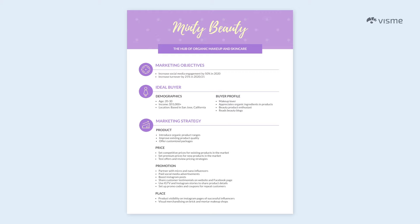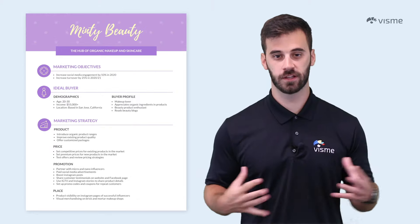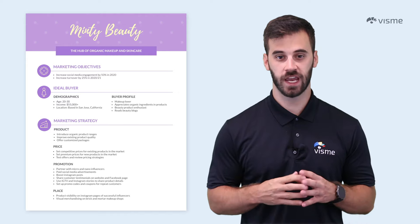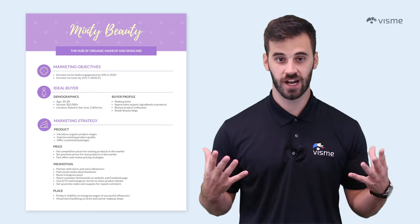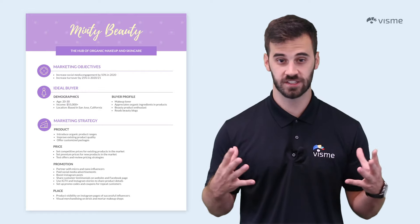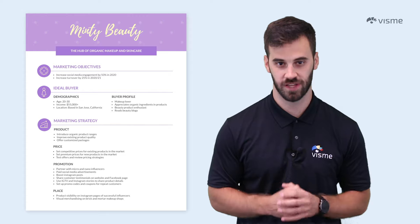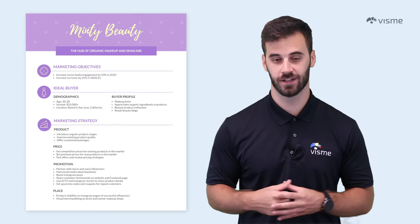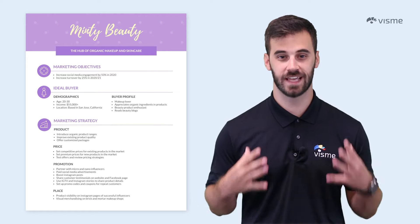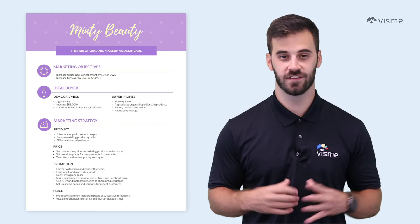If you wanted to go the extra mile and include even more detail, you could also add an overview of the current market situation, key performance indicators, budget or financial considerations, or a timeline on when the plan will be carried out. Typically all of this information is communicated on a PDF, but if you're feeling creative, try creating an infographic, a full presentation, or an interactive web page to share your plan. It could be the difference between your plan and someone else's. Let's dive into seven steps for creating an effective marketing plan.